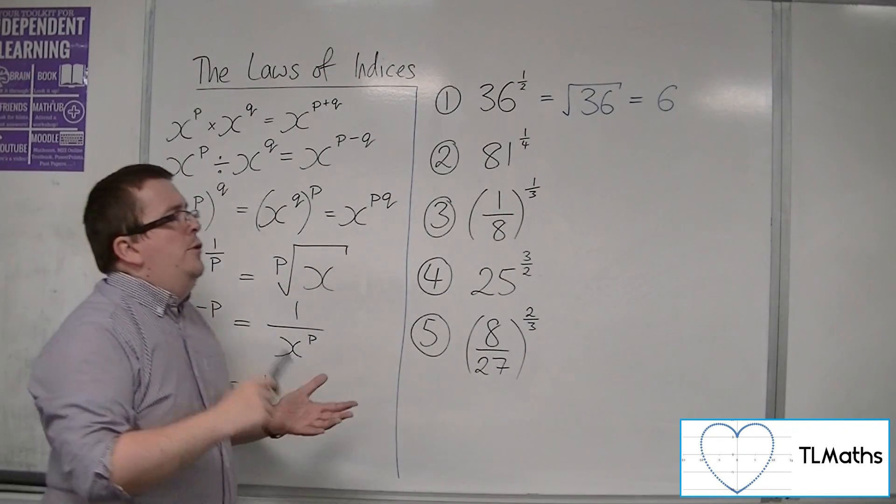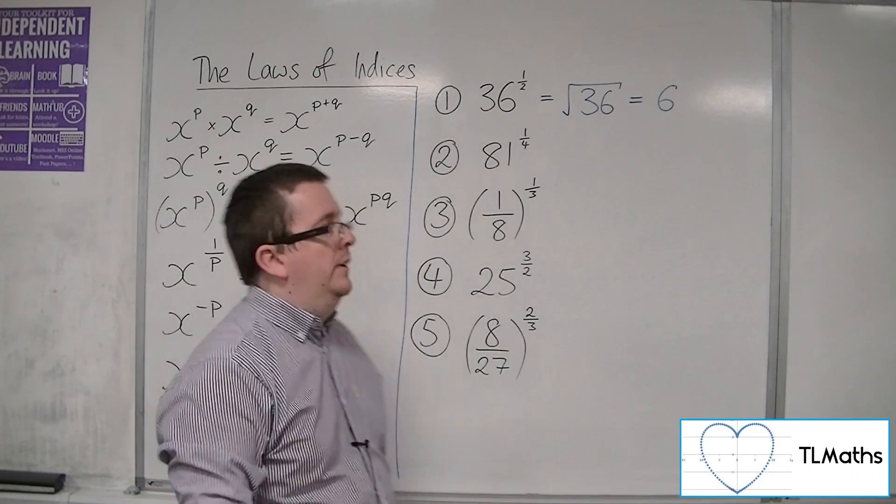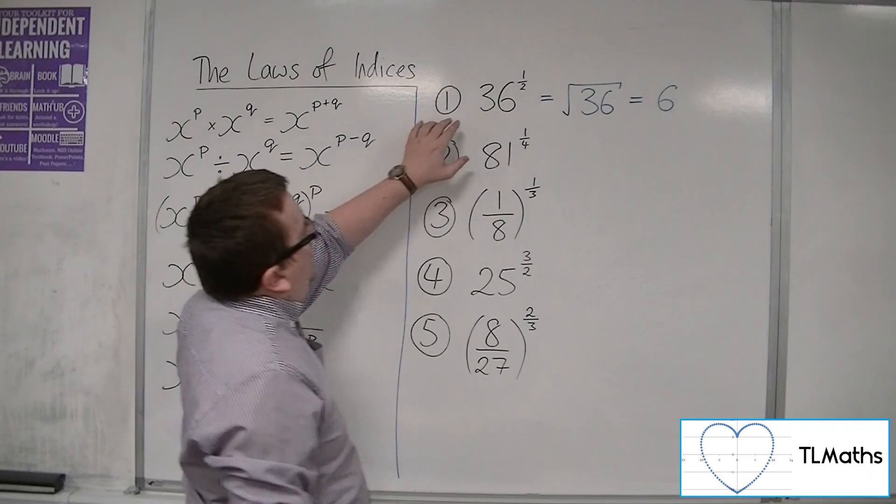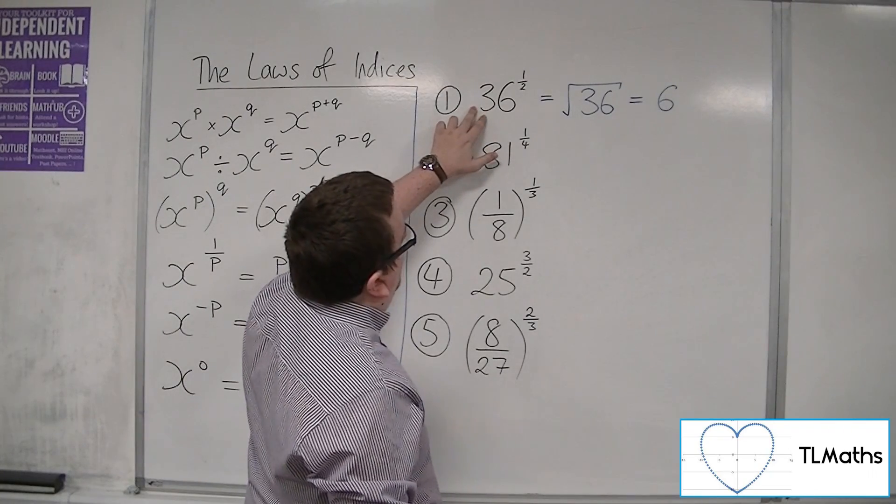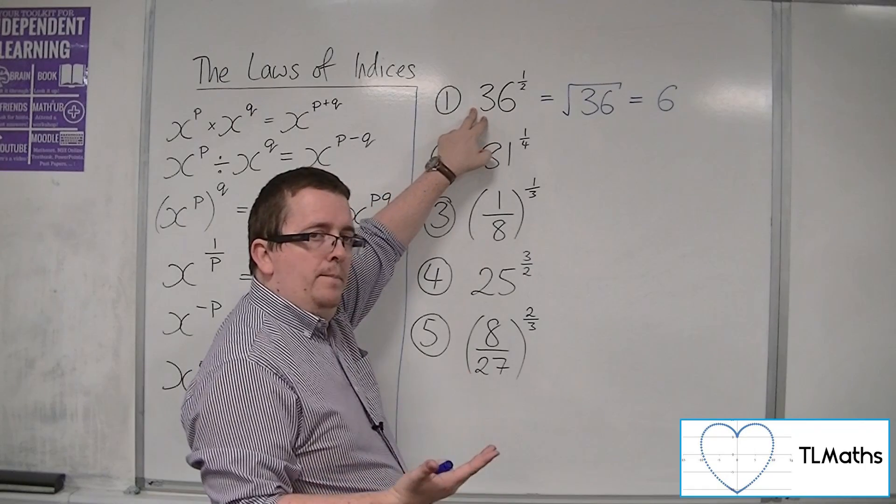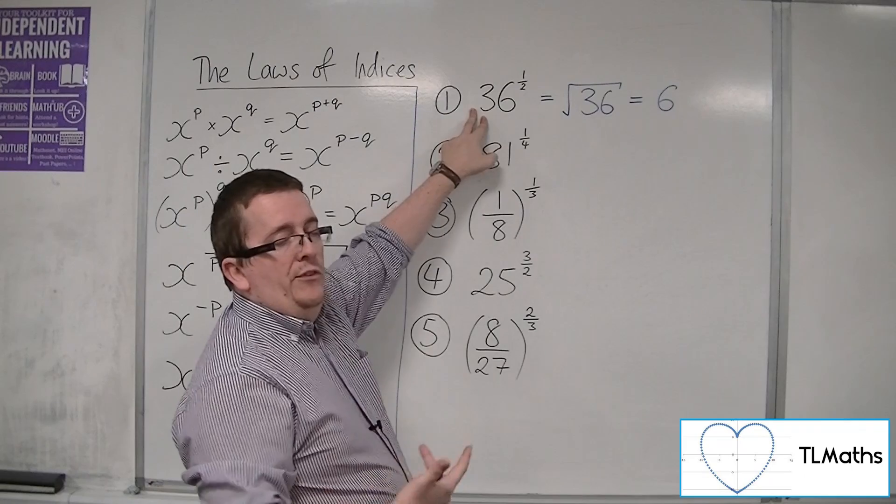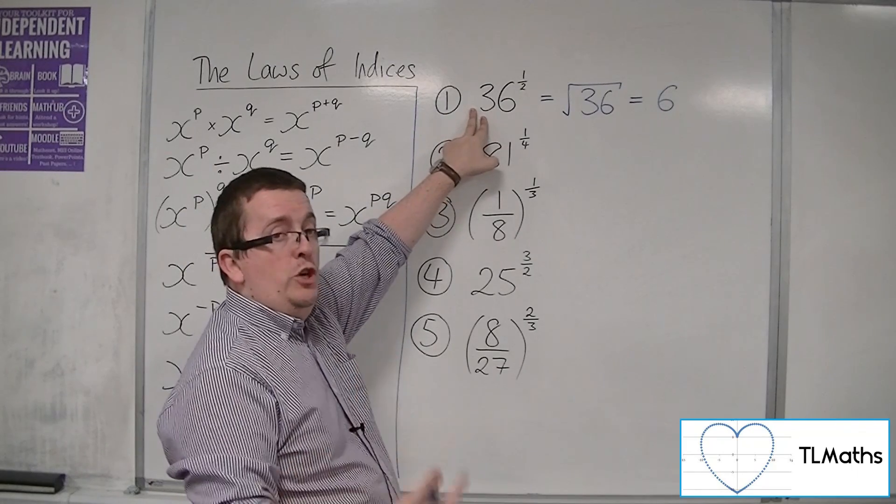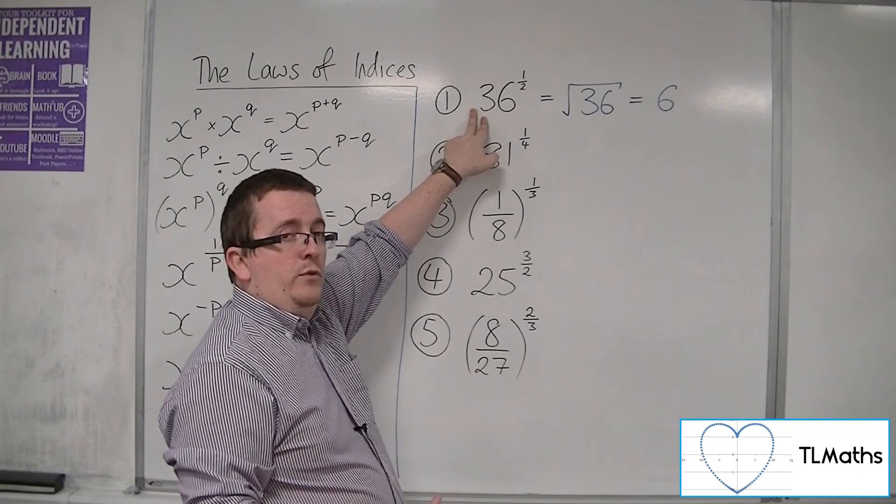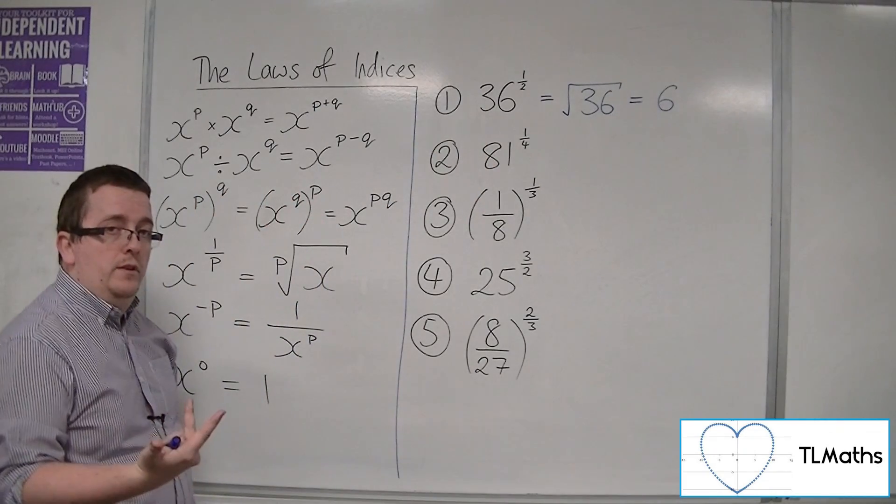Now, don't be thinking here that it is plus or minus 6. Because I have already written it down, 36 to the half, in order to identify whether this would be positive or negative, I would already have had to have chosen whether it was positive or negative, whether I was taking the positive or negative square root.